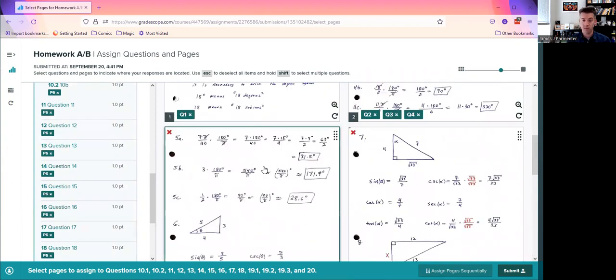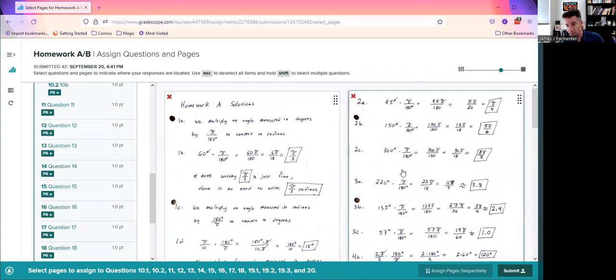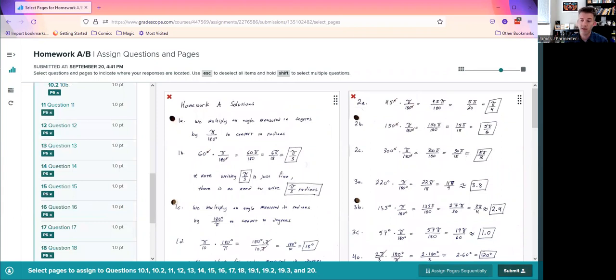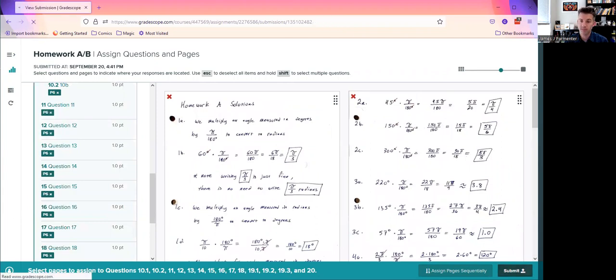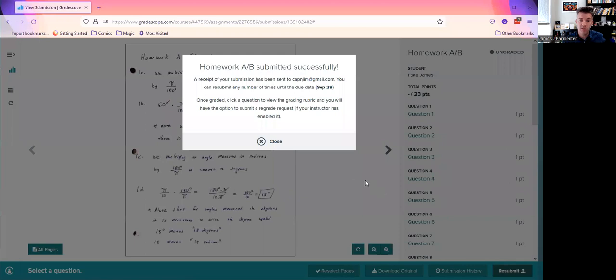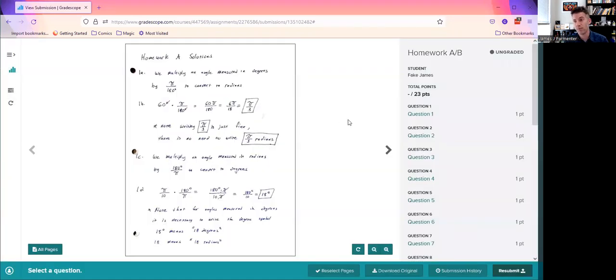After you've put the right questions on the right pages, you're going to just click submit in this lower right-hand corner here. And that's all there is to it. So you want to have scanned things as a PDF using a scanner app. Then you want to go to Gradescope. You want to first select your PDF, then upload your PDF. And then you want to do the all-important step of assigning questions and pages.